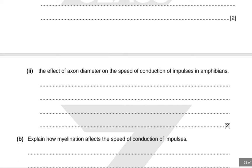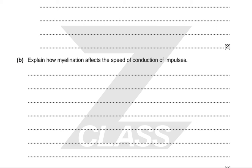Explain how myelination affects the speed of conduction. Myelin is a fatty compound that insulates the axon. Where the myelin surrounds the axon, there can be no depolarization because ions cannot cross the membrane there. However, there is no myelin at the nodes of Ranvier, so depolarization and action potentials can only occur at these nodes. Local circuits are set up between the nodes and action potentials jump from node to node — this is called saltatory conduction. This greatly increases the speed of impulses because the depolarization doesn't have to travel down the entire axon.